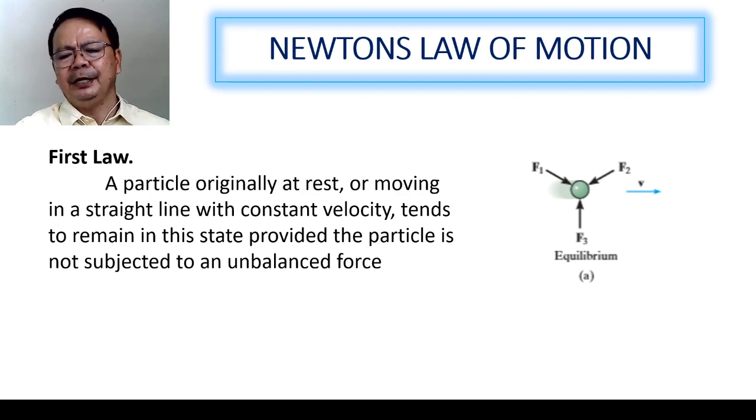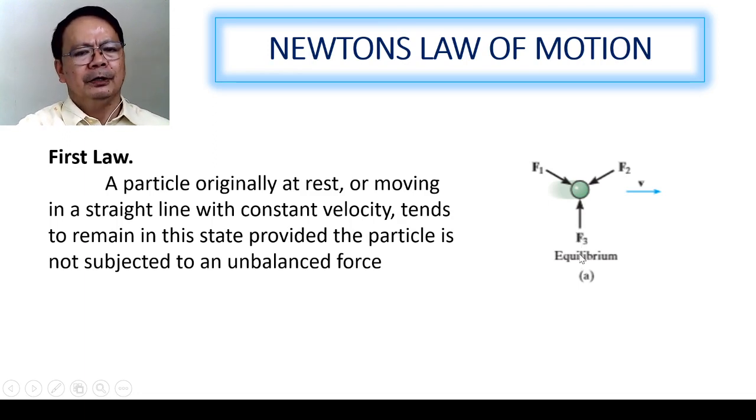Let us imagine that we have here a body that is subjected to an acceleration V. This body is subjected to different forces F sub 1, F sub 2, and F sub 3. If this body is in equilibrium, meaning the first law would explain that this body will maintain its velocity if these forces shall be in equilibrium.